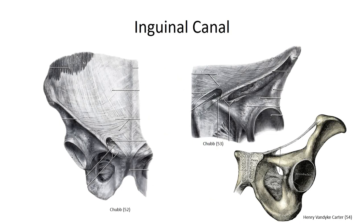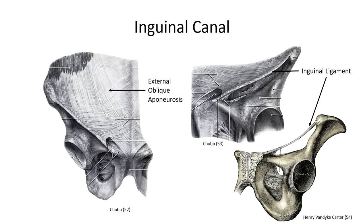The inguinal canal is bound and reinforced by the myofascial layers of the anterolateral abdominal wall. The aponeurosis of the external oblique muscle projects inferiorly to form the anterior wall of the inguinal canal. At its inferior-most point, the aponeurosis curves dorsally to form the floor of the inguinal canal. Because the fibers run from the anterior superior iliac spine down to the pubic tubercle — connective tissue running between two bones — it is now considered a ligament: the inguinal ligament, which provides structural support to the floor of the inguinal canal.